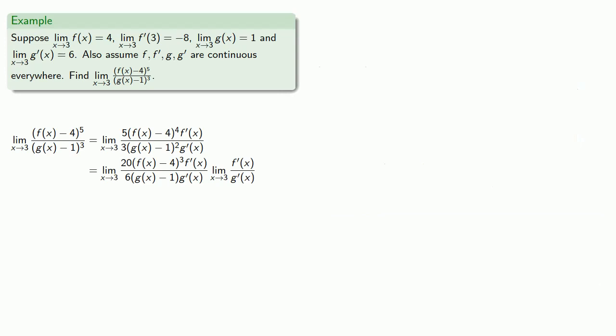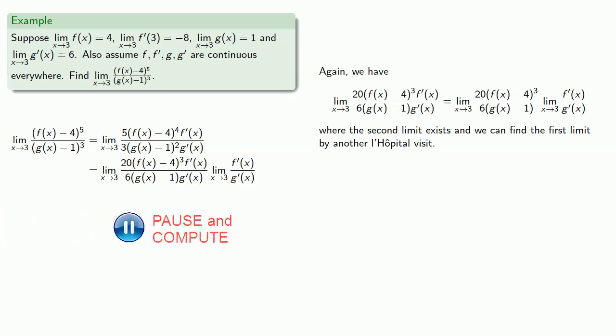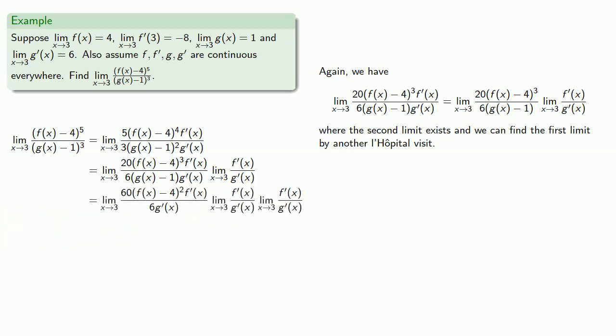And again, numerator and denominator are both going to 0, but we can split numerator and denominator into factors that go to 0 and everything else. And again, the second limit exists, and we can find the first limit by another L'Hopital visit. And since g'(x) isn't 0, we can evaluate this limit directly.